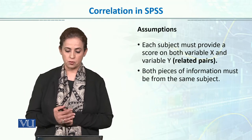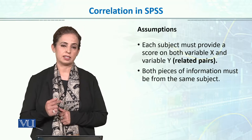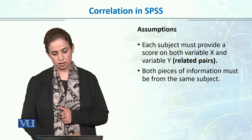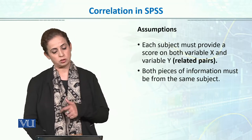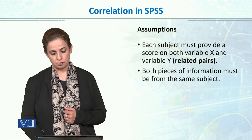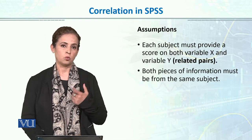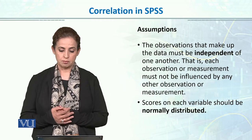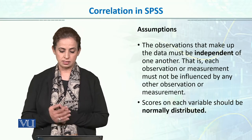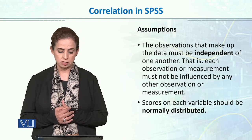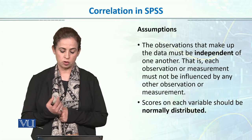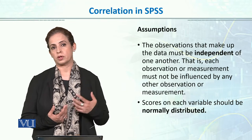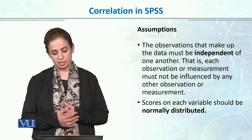The second assumption is that each subject must provide a score on both variables — the same subject must contribute data to both X and Y. The third assumption is that the observations must be independent of one another; each observation or measurement must not be influenced by any other observation or measurement. The two observations on X and Y are independent, with no effect from any third factor or other variable.